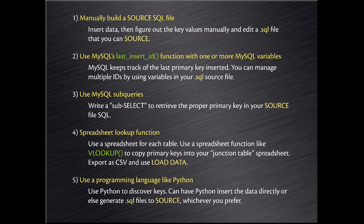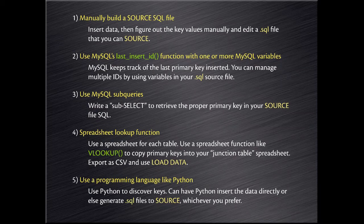The first technique is that we're manually going to build a source SQL file, exactly like what we did in the insert video lecture, but we'll go a step further and reconcile primary keys and foreign keys. The second one uses a MySQL function called LAST_INSERT_ID to retrieve the primary key so we can insert it as a foreign key. Since we've got two primary keys, we'll use a MySQL variable to store one of them. The third technique uses a MySQL subquery or subselect to retrieve a primary key for insertion as a foreign key in another table.